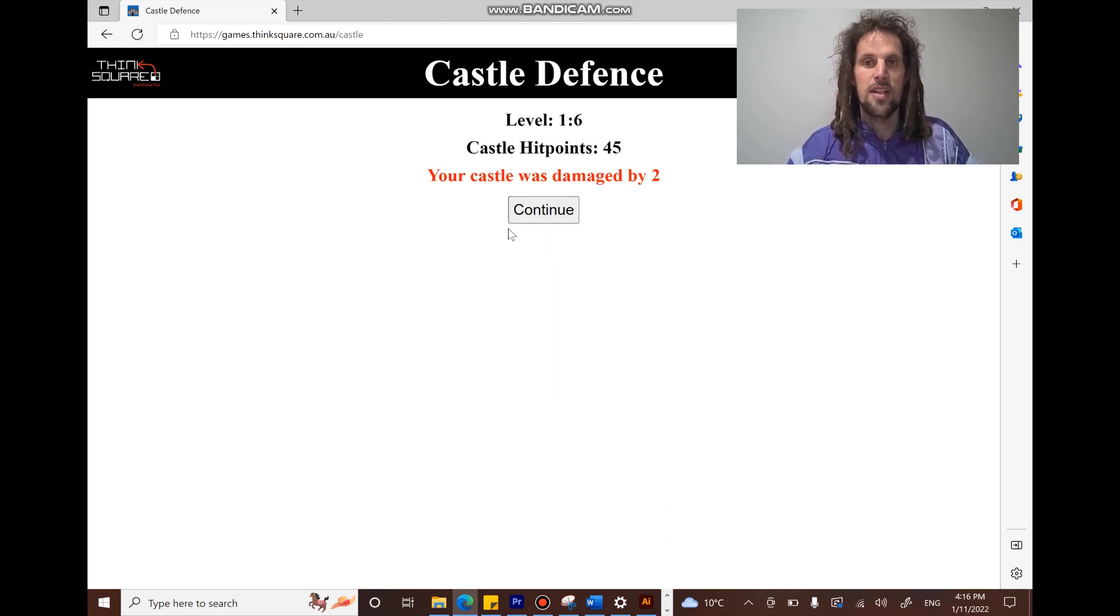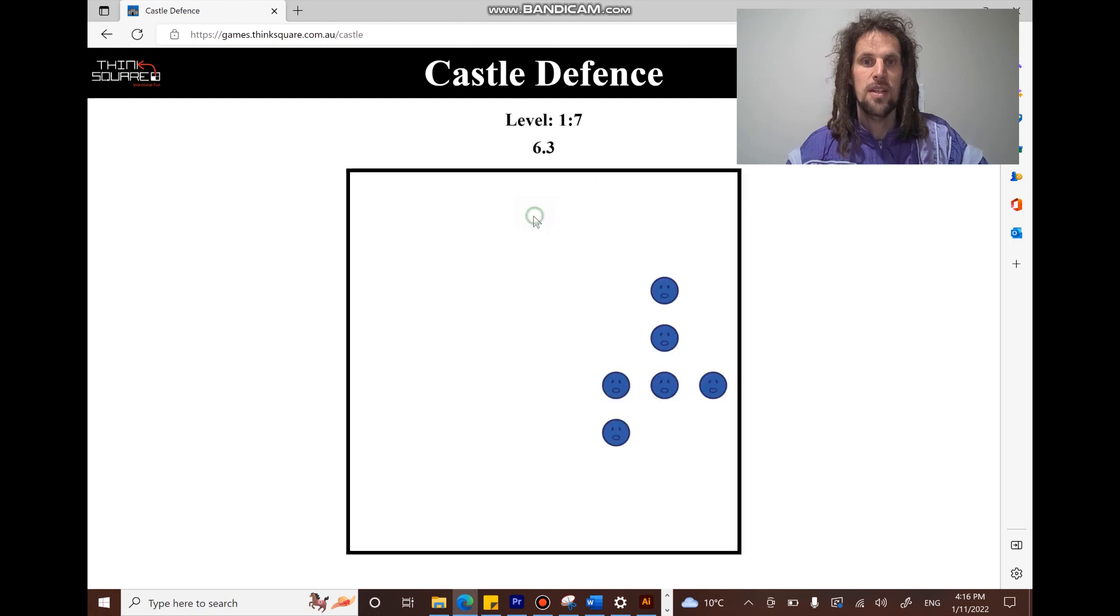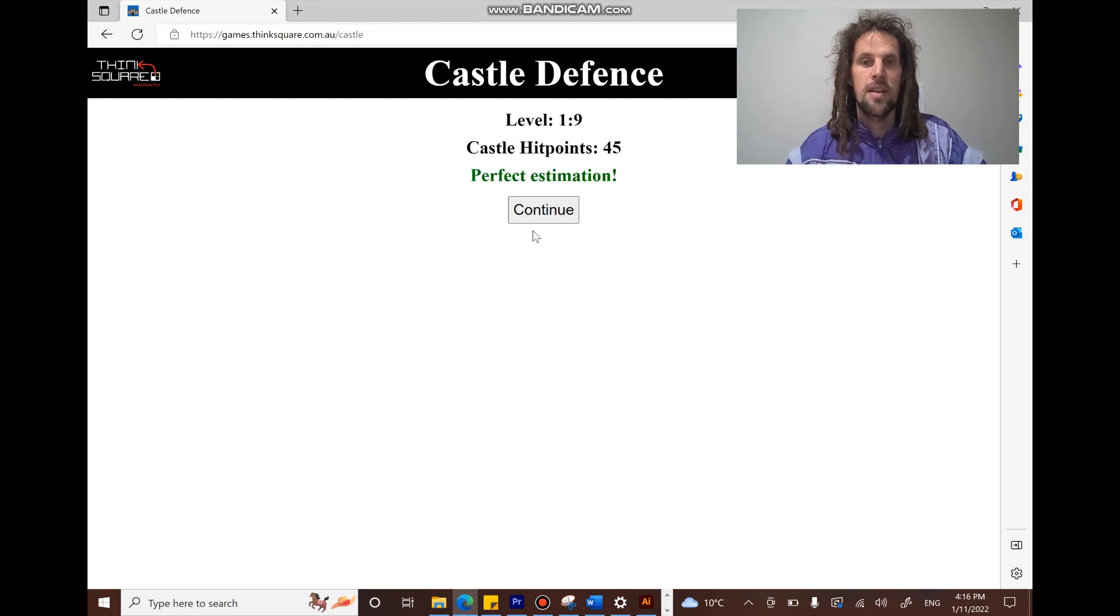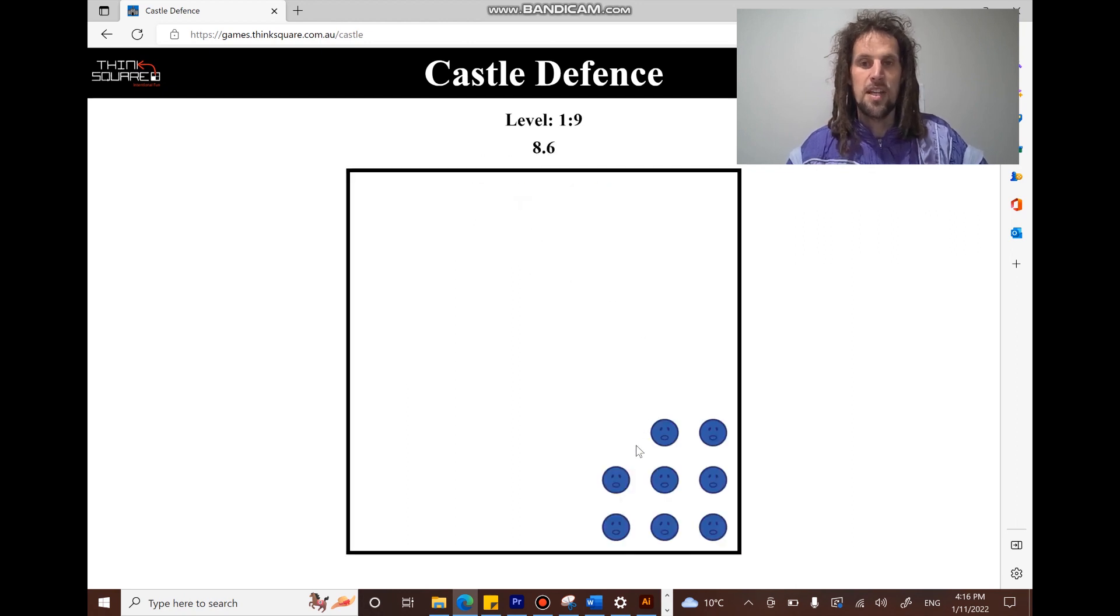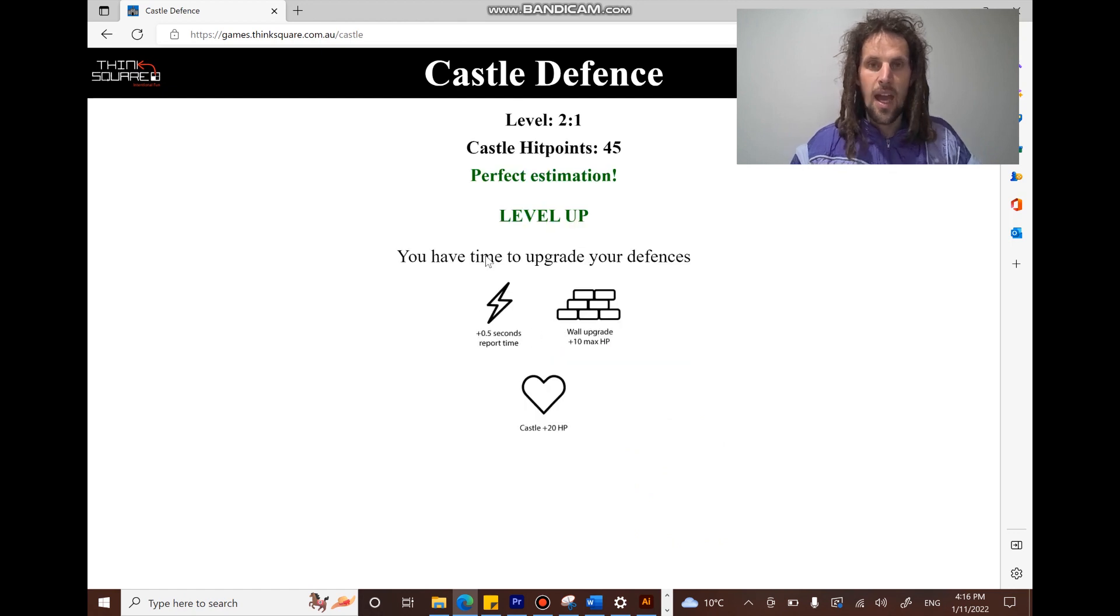This continues for 10 waves until you get to the end of a level. So I'll get seven there. I see three and three, six. And that's five. And finally, I see nine take away one. So I see eight here. I'll click eight. At the end of 10 waves, you go up a level and you'll get to make an upgrade to your castle. So you can get more time to report back, a wall upgrade, or add 20 hit points to your castle.